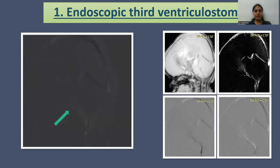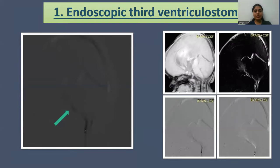This is a patient with endoscopic third ventriculostomy. As we can see, there is good to-and-fro flow motion across the third ventricle, which suggests positive outcome of ETV. On the left side, we can see four images. The first one is the defaced image in which the background is visible and the flow appears bright. The second one is the magnitude image in which the background is dark and the flow is bright.